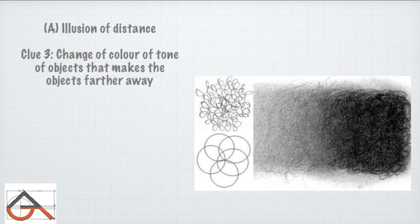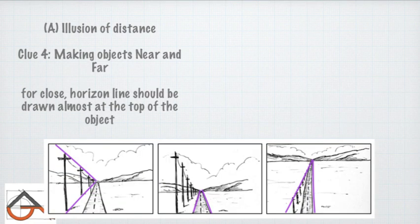Also, the change of color or tone of an object makes it appear farther away. You can also use different shading materials to differentiate objects and make them look distinct. These techniques can be incorporated into your drawings to show depth and distance.